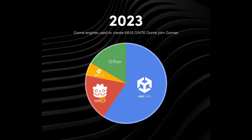I think GMTK game jam 2024 will show at least 25% of games made with Godot. We also have over 5% with Game Maker, and other engines or no engine at all making up around 20%. Since the Unity runtime fee debacle, lots of developers started migrating from Unity to Godot — I'd estimate at least 10% of Unity developers completely switched, with some entire projects being ported over.